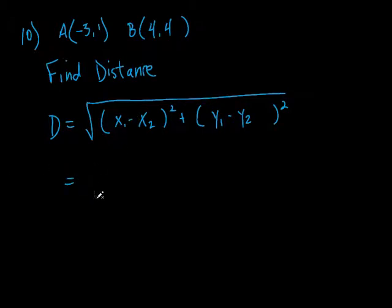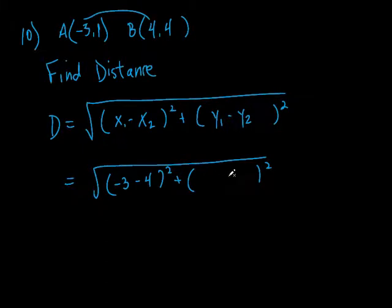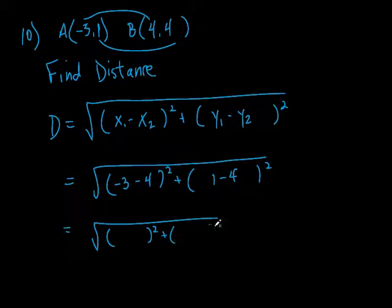Let's figure out what goes in here. Keep the square root — don't forget it. I've seen several people start working this out and forget to put the square root on at the end and then it's wrong. So: subtract the x's — those are negative 3 and positive 4. It's negative 3 minus 4. Then subtract the y's: 1 minus 4. Negative 3 minus 4 is negative 7. So put negative 7 right there.